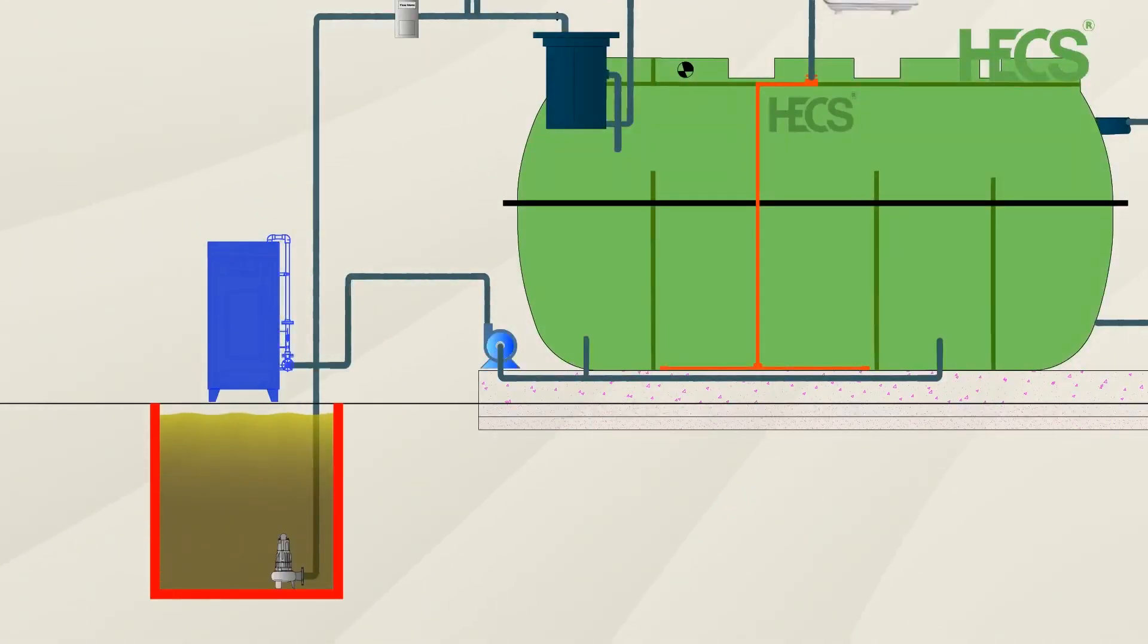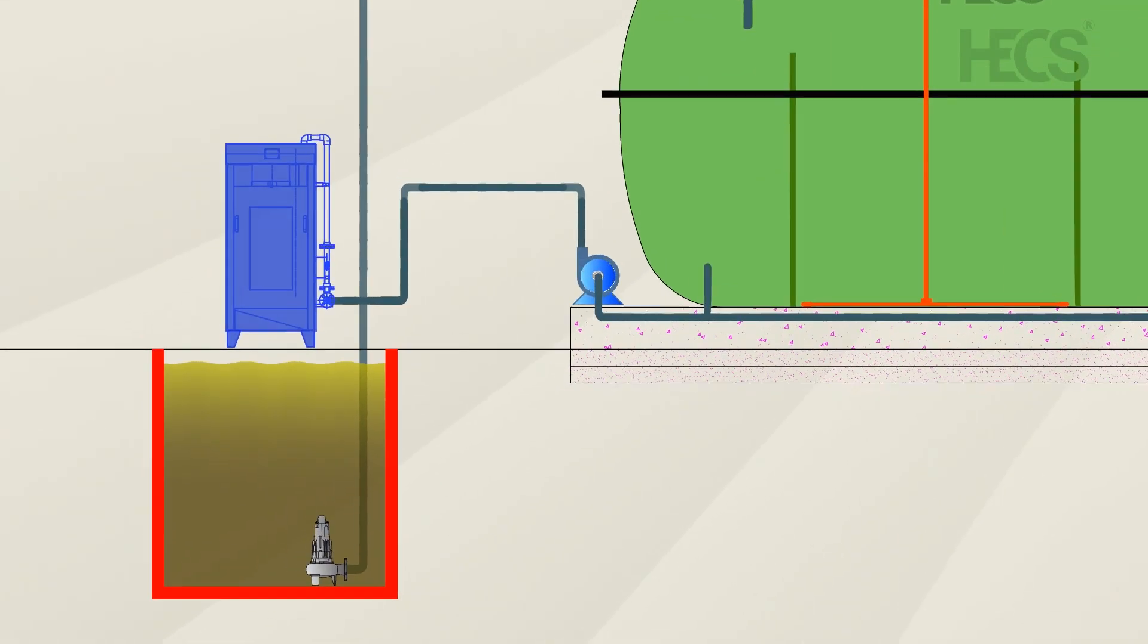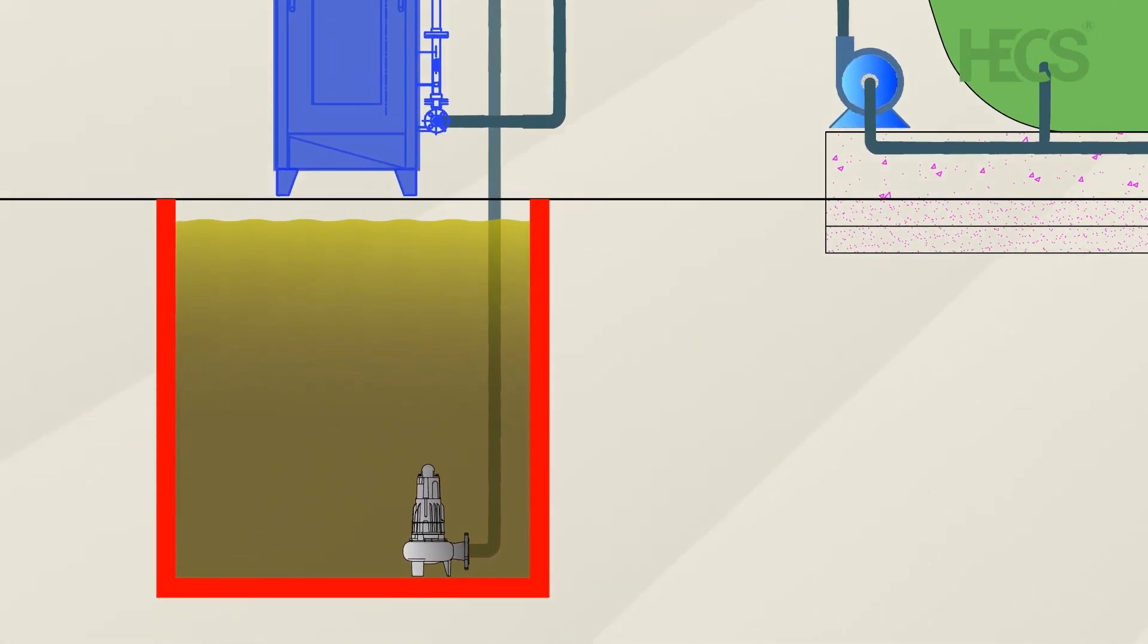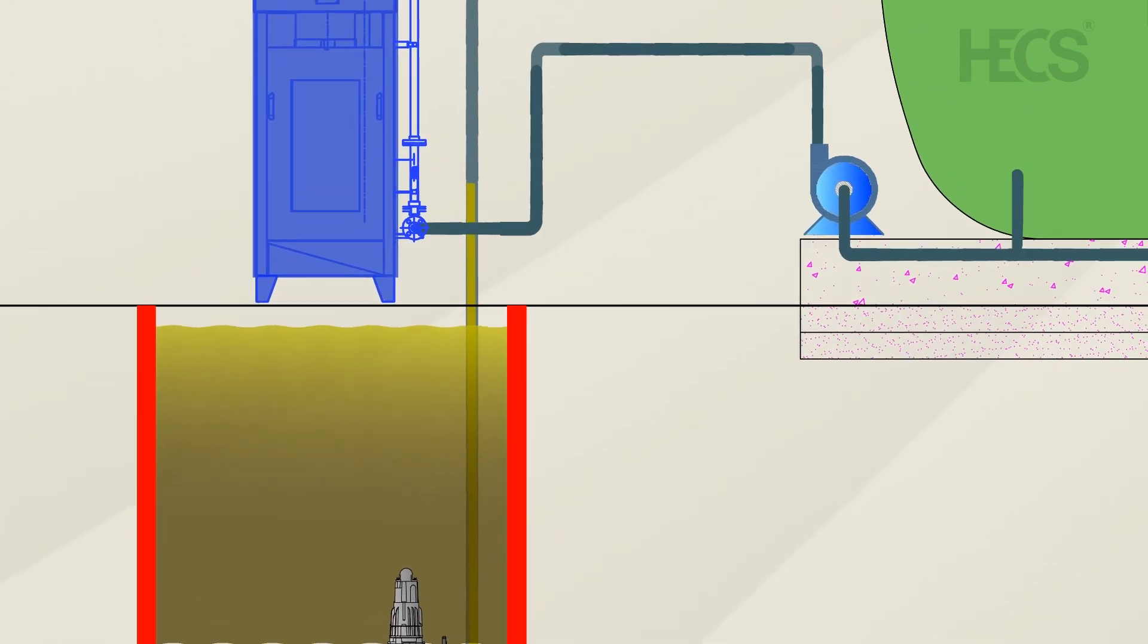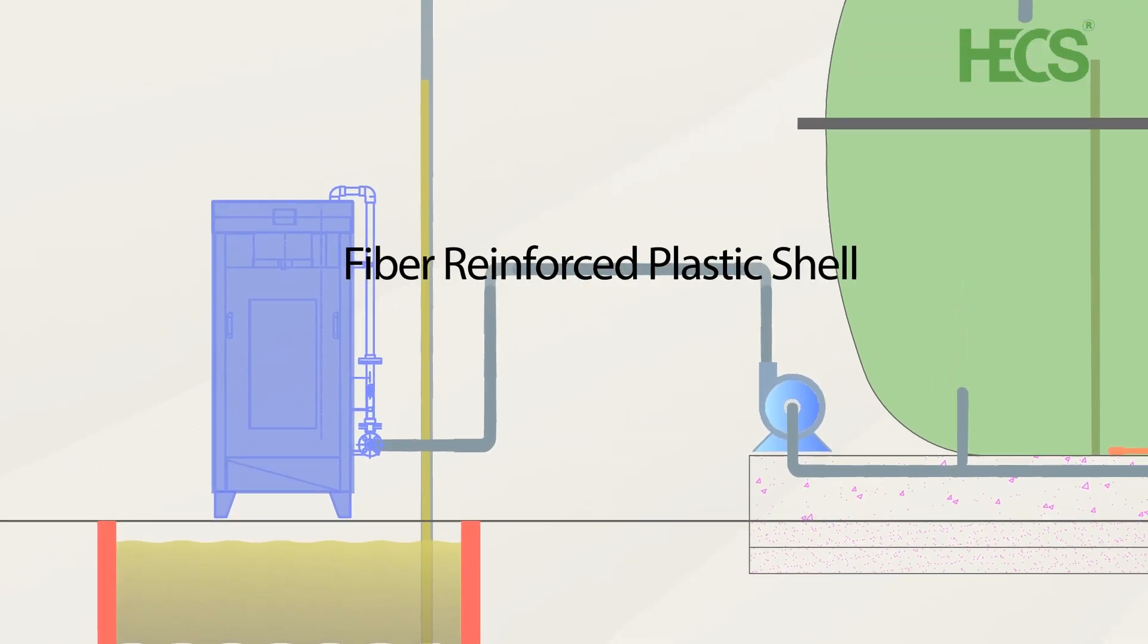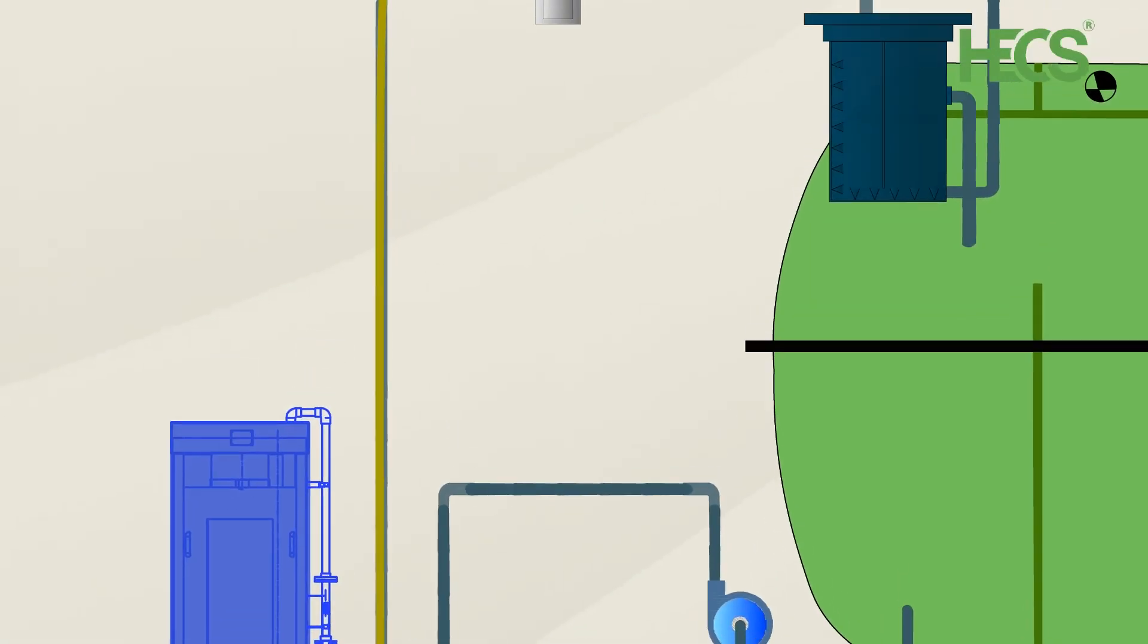Let's dive into the process. Effluent begins its journey from the collection tank, from which it is pumped into our compact system, which comes in an FRP, fiber reinforced plastic shell, which consists of multiple chambers.